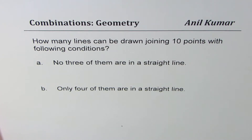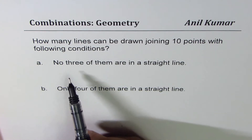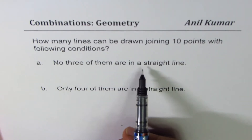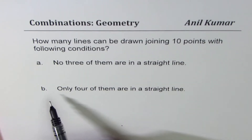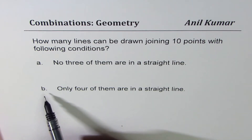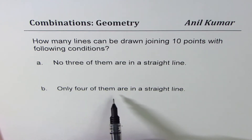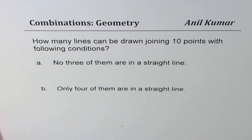The question here is: how many lines can be drawn joining 10 points with the following conditions? The first condition is no three of them are in a straight line, and the second condition — these are two separate questions — only four of them are in a straight line.